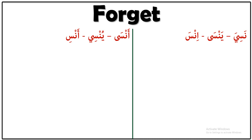Nasiya, yensa, insa means you forgot or he forgot by himself — he forgot something. But ansa, yunsi, ansi means 'made me forget' — someone or something made me forget.